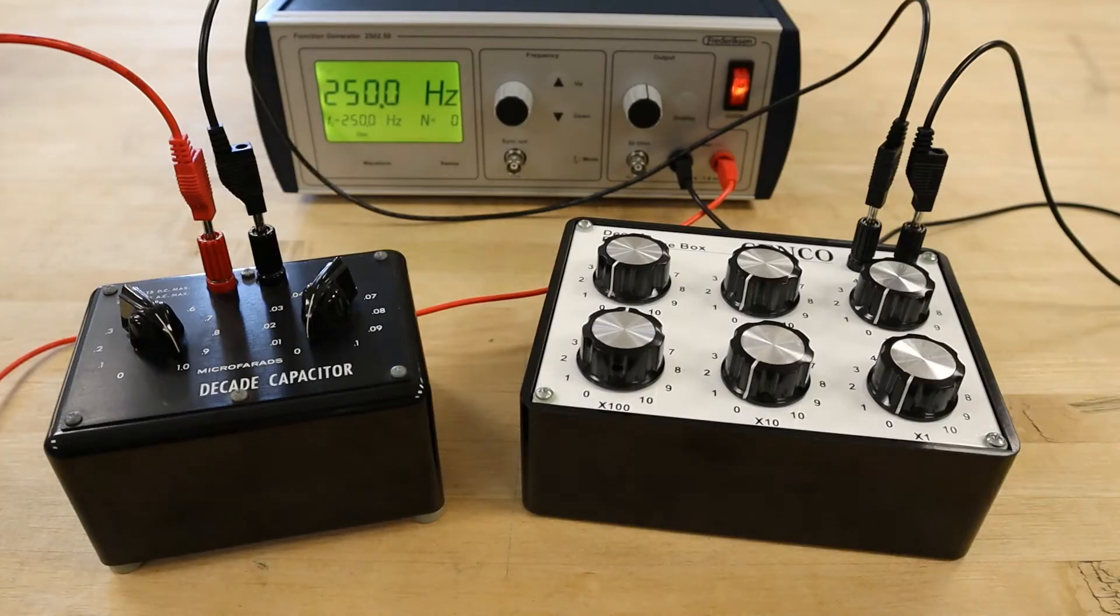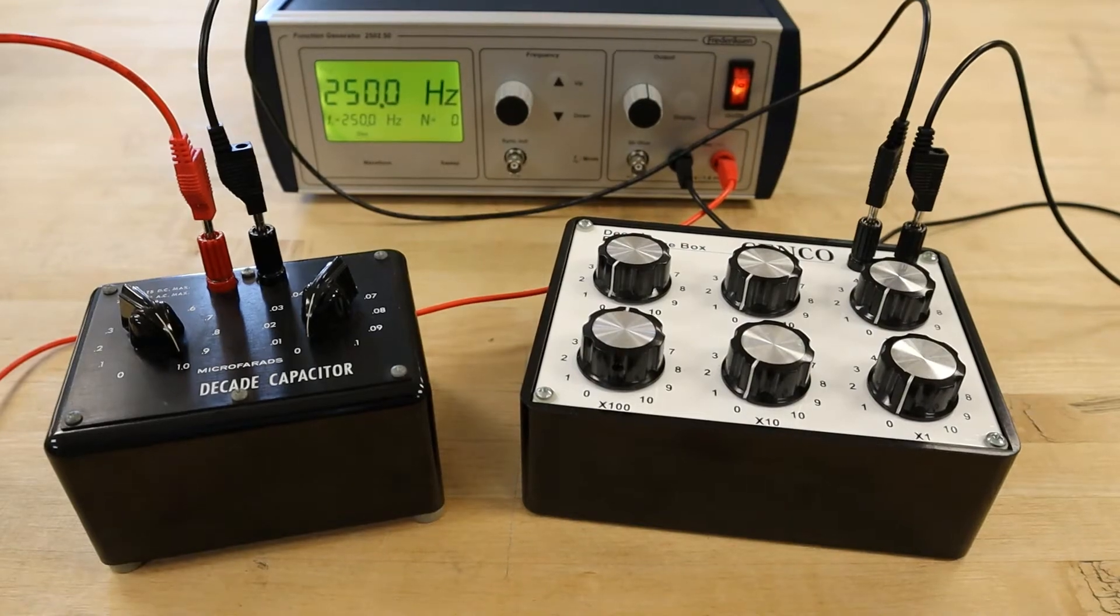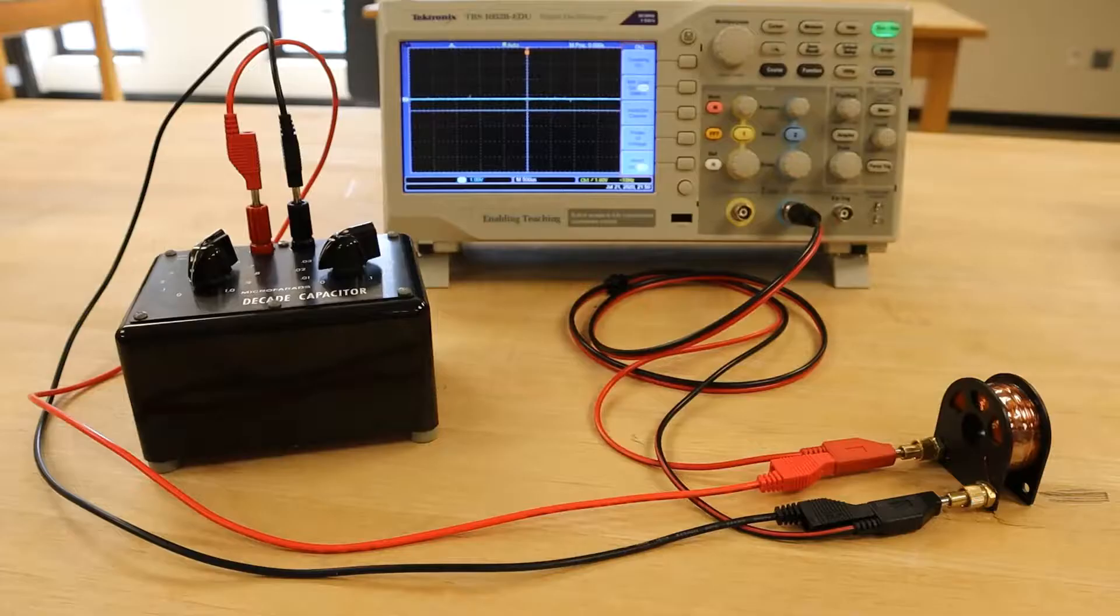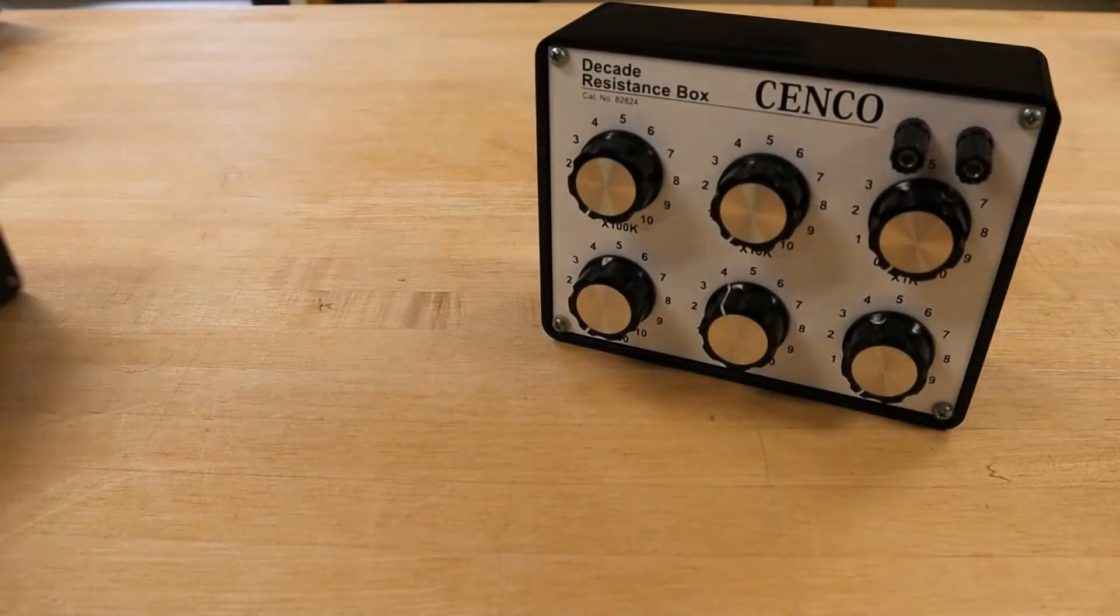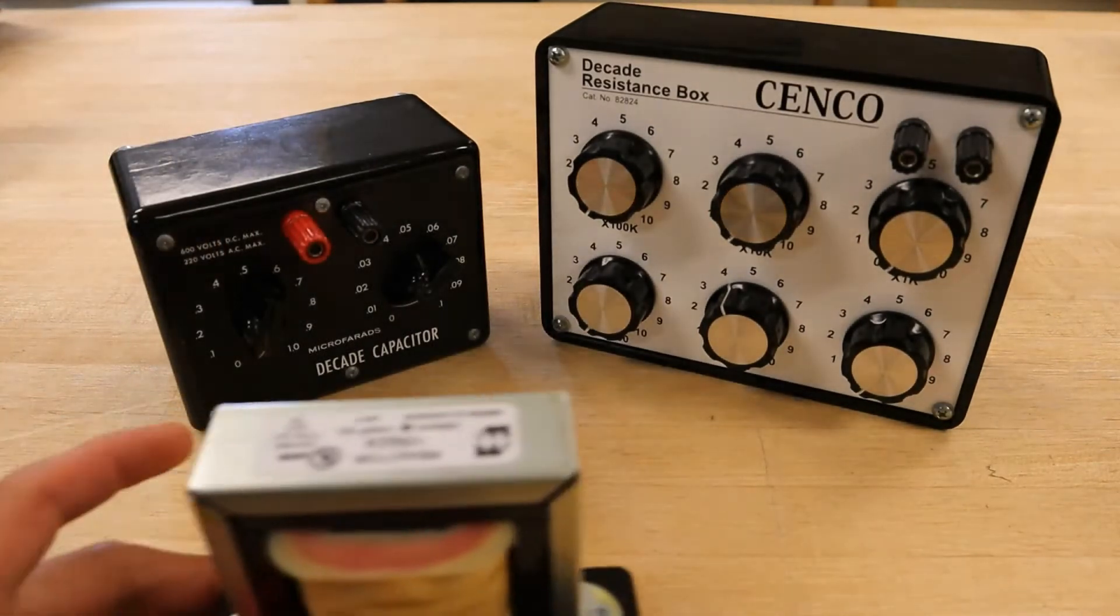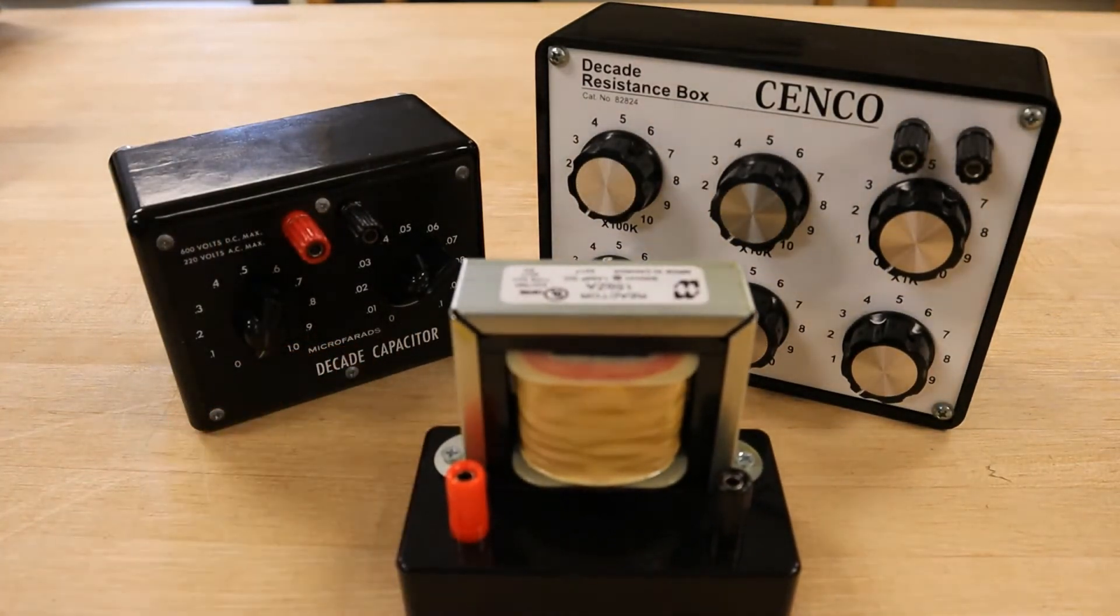In the previous laboratory experiment, you were introduced to RC, RL, and LC circuits. Now, in this experiment, we will combine a resistor, capacitor, and inductor to create a series RLC circuit.